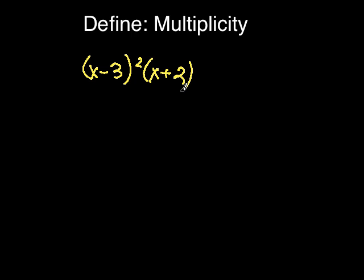Whenever a polynomial has a zero with an even multiplicity, it bounces off that zero. So in this polynomial, the graph looks like this.